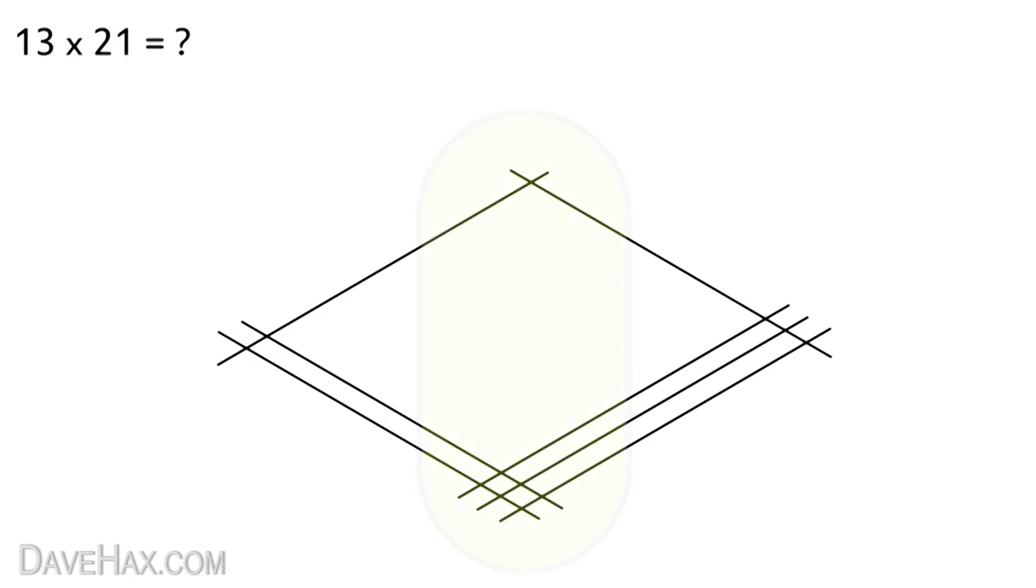Once we've drawn it out we need to separate it into three separate zones where the lines cross like this. Then starting from the right-hand zone we need to count how many times any of the lines cross. In this case three. We write that here and move on to the next zone.